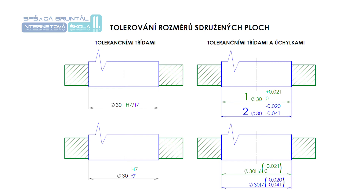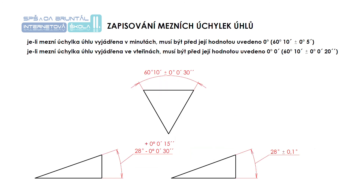Pokud udáváme přesnost uložení na výkrese sestavení, jmenovitý rozměr se zapisuje jenom jednou a toleranci uložení lze zapsat buď toleranční značkou, nebo číselně. Vymezení úchylky rozměru díry se zapisuje před toleranční značkou nebo číselnými mezními úchylkami hřídele, nebo nad ní. Na těchto obrázcích je kótování úhlů, roztečí a otvorů, pro které platí zásady jmenované již u předchozích obrázků.